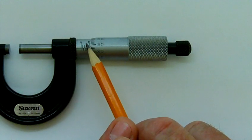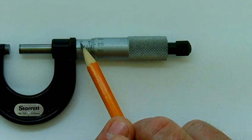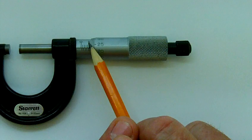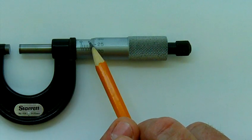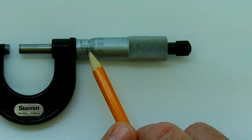On the sleeve, I'm seeing zero, then a five. Do you remember the inch micrometer? It was zero, then a one, then a two. This one goes zero, five, ten, fifteen, twenty, if we reveal underneath the spindle.